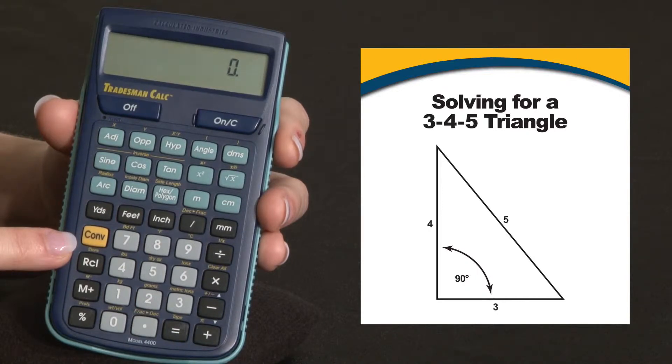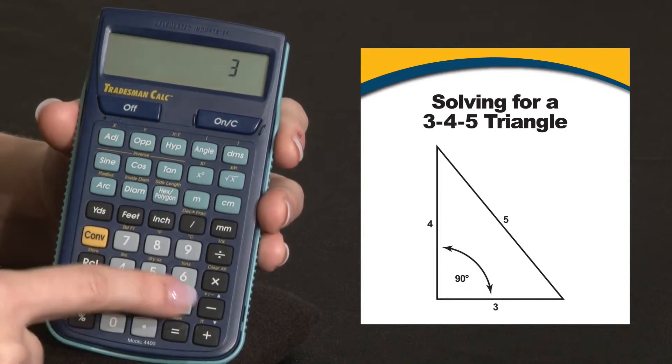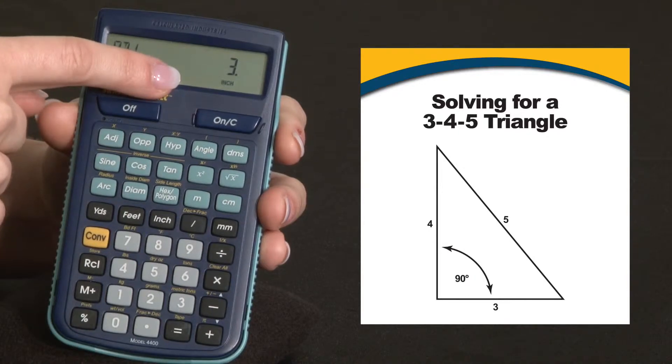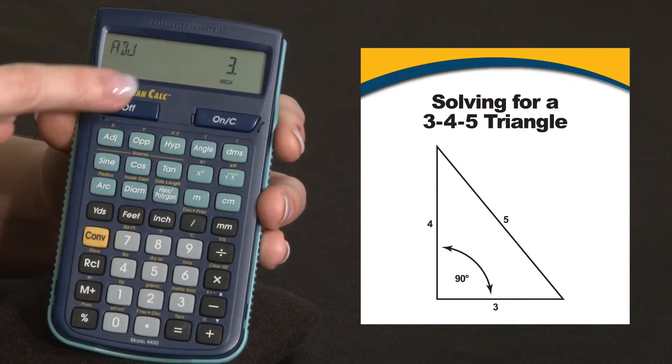For example, a very common triangle is the 3-4-5 right triangle. We enter 3 for the adjacent side, which defaults to inches. You can change that in the preferences if you like.